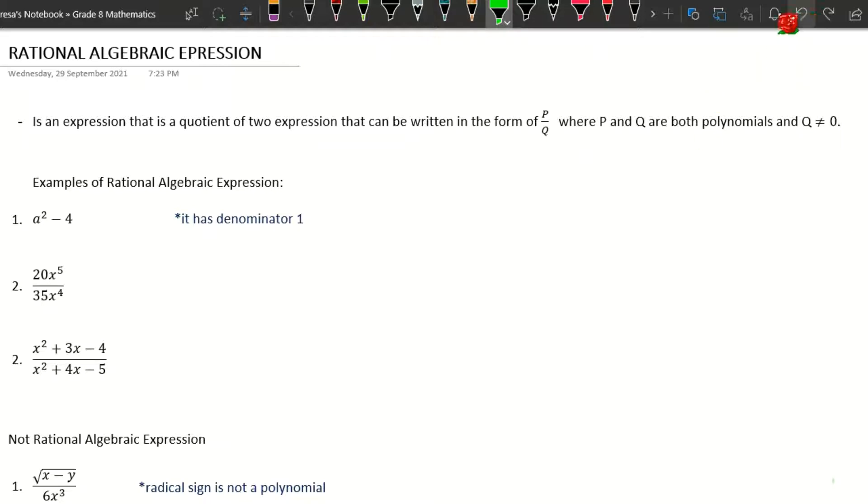In other words, a rational algebraic expression is a fraction that has a polynomial in the numerator and denominator, or in the numerator or in the denominator. And take note that our denominator should not be equal to zero. When we say polynomial, class, it can be a monomial, binomial, trinomial, or any terms of polynomials.